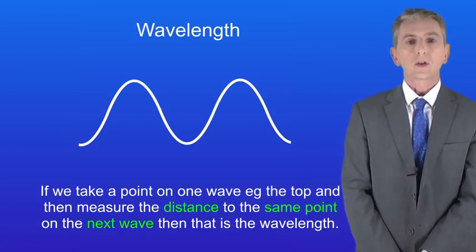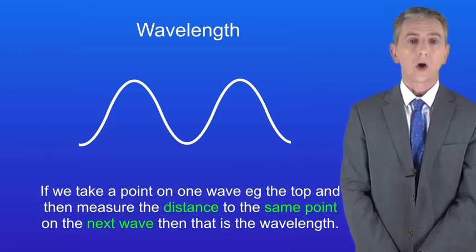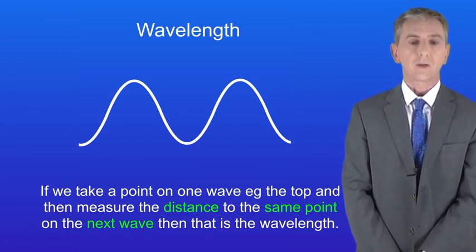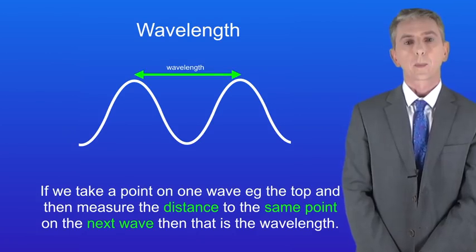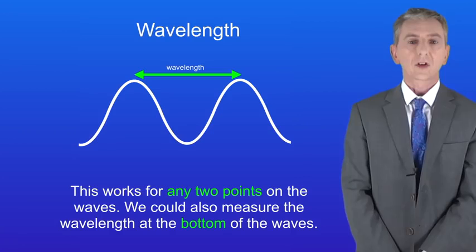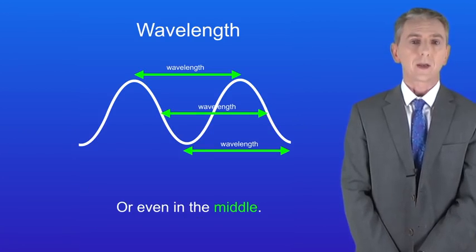Well if we take a point on one wave, for example the top, and then measure the distance to the same point on the next wave, then that's the wavelength and I'm showing that here. Now this works for any two points on the waves so we could also measure the wavelength at the bottom of the waves like this or even in the middle like this.